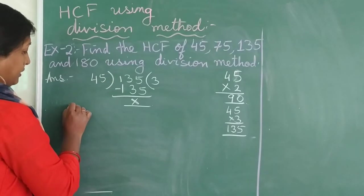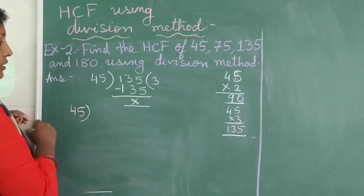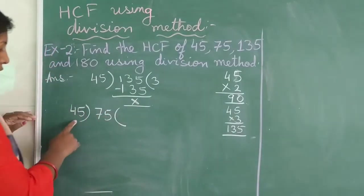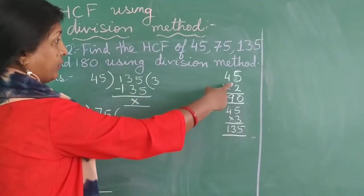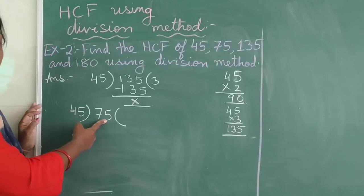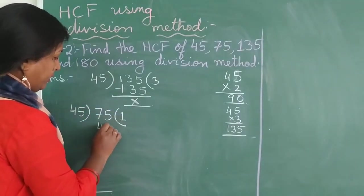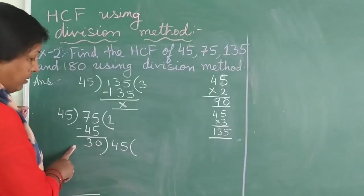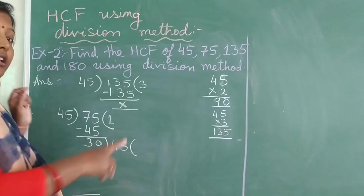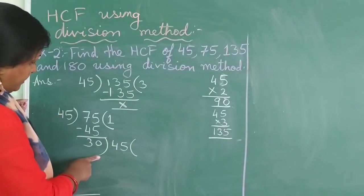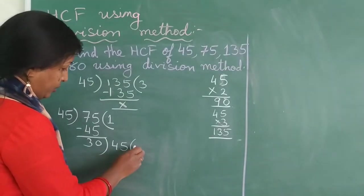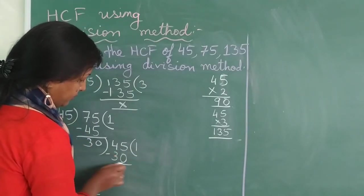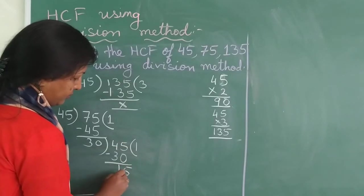Now take this divisor as your next divisor. Take the next number, let us take 75 this time. Now 45, table we have already read. 45 twos are, is 90 bigger than 75, is it not? So 45, 1s are 45. We subtract and get 30.